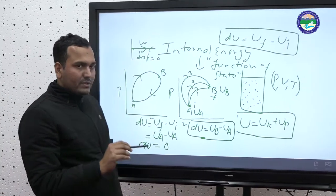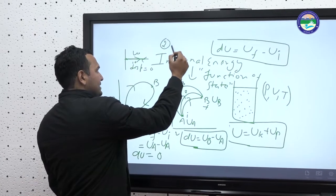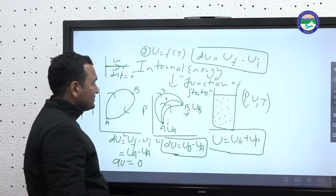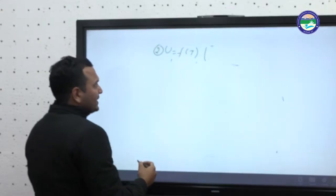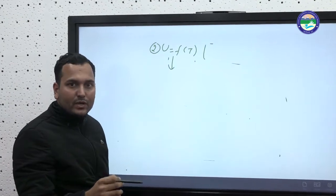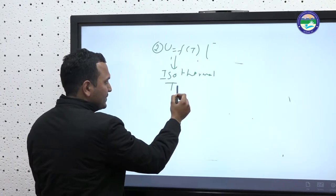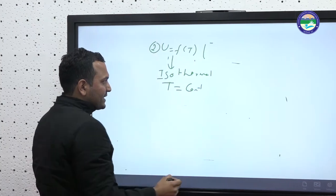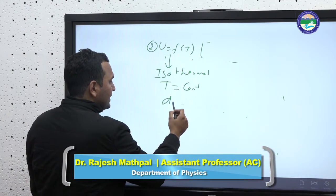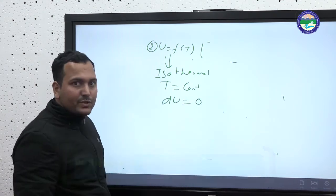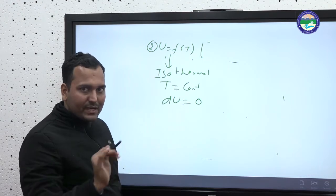The second important point is that internal energy is a function of temperature. As discussed in the last lecture for the isothermal process — in an isothermal process, temperature remains constant. So if temperature is constant, the change in internal energy will be zero. So note: U is a function of temperature. If temperature changes, internal energy changes; if temperature is constant, dU = 0.